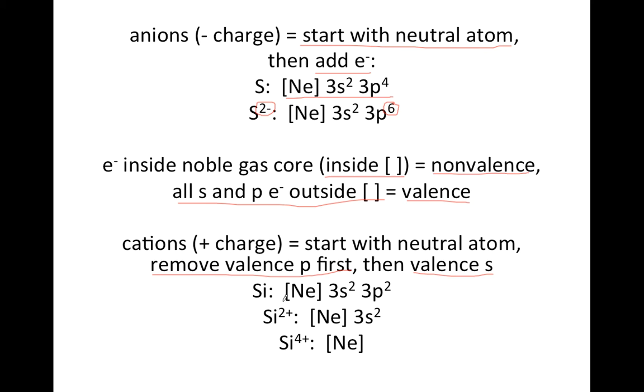In this example, we have silicon Si, starts out [Ne] 3s² 3p². If I then want to make it 2+, that means I have to remove two electrons, so I have to choose which electrons to remove.